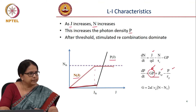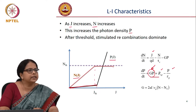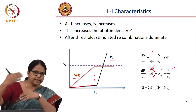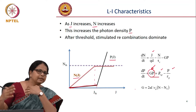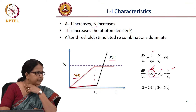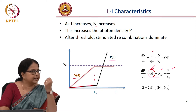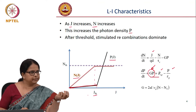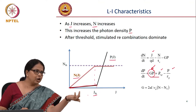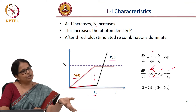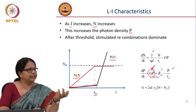The steady-state carrier density gets clamped at n_th and remains constant. The excess carriers injected beyond threshold create stimulated emission, leading to the linear increase in photon output. This j_th depends on the photon lifetime — i.e., the loss in the system. Larger the loss, the smaller the photon lifetime, since photons cannot survive as long in the cavity. That is the inverse relationship.